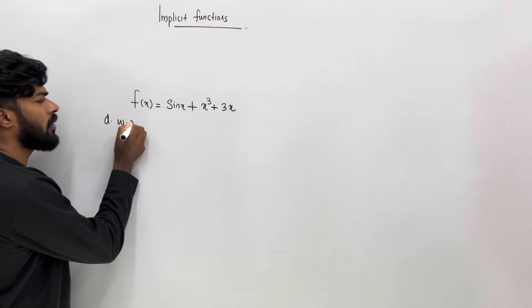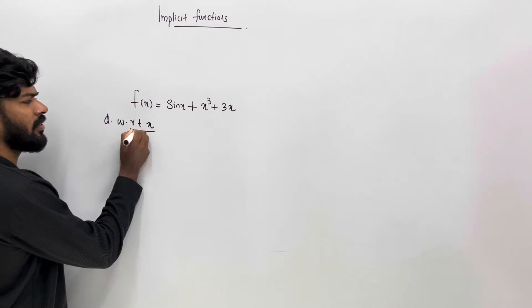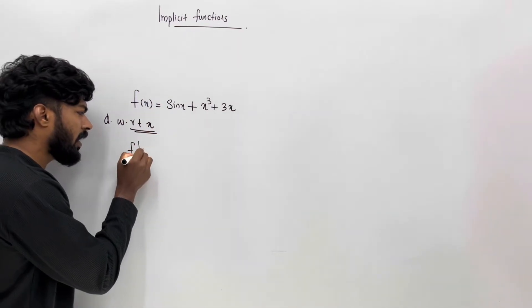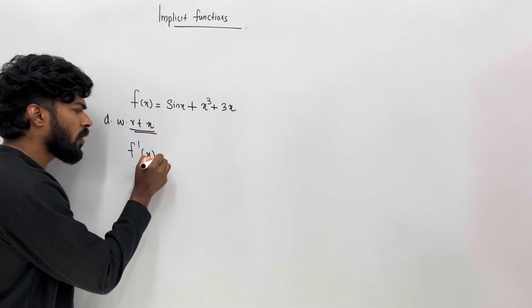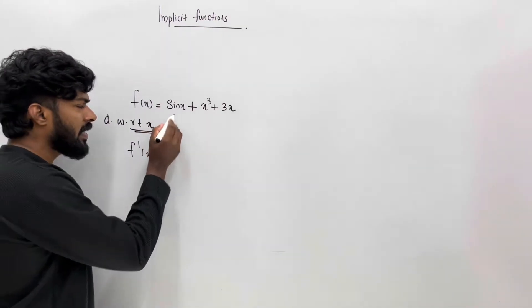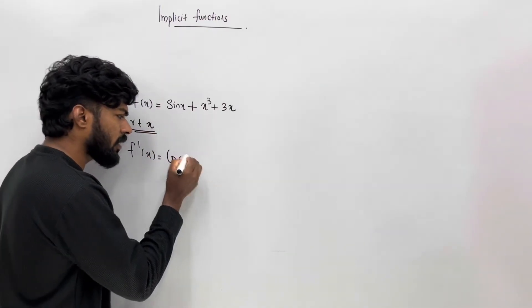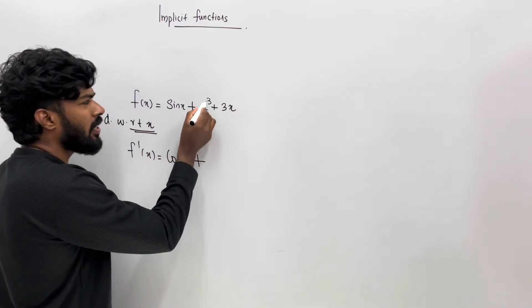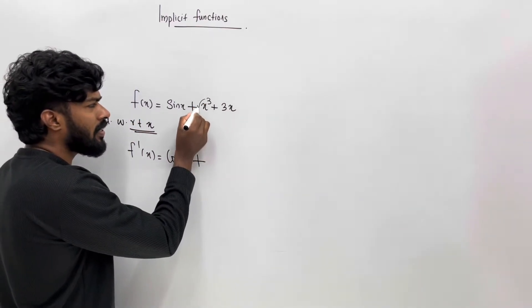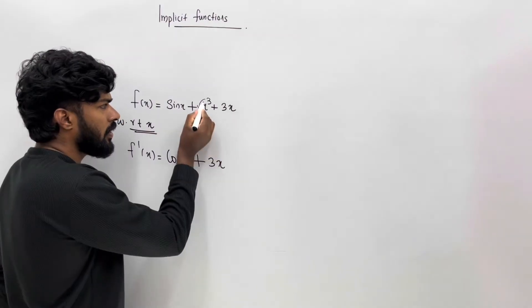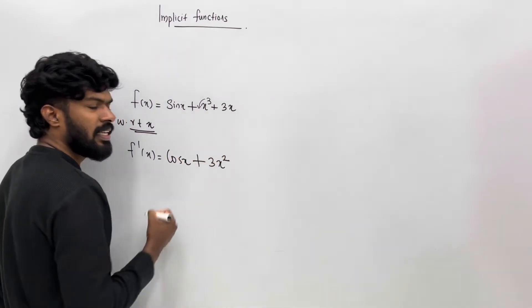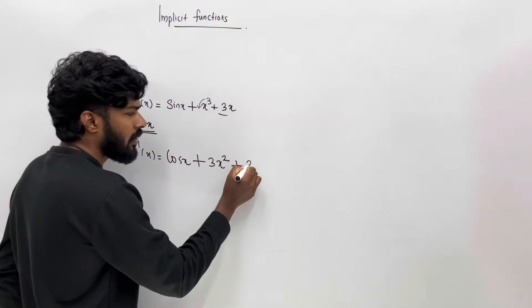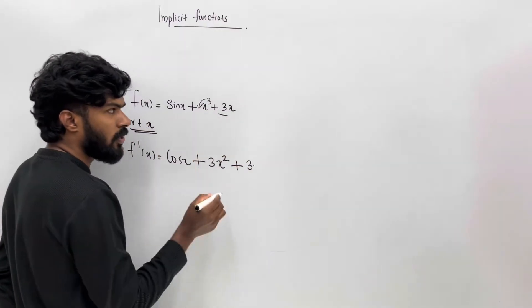Derivative with respect to x. We get sin x becomes cos x, x cube, and 3x terms.